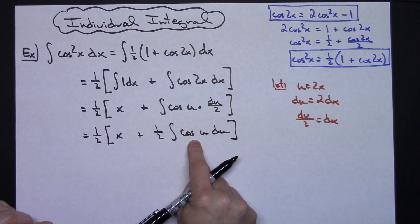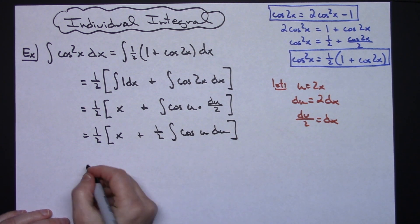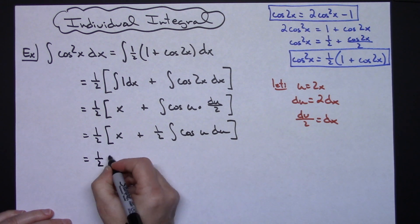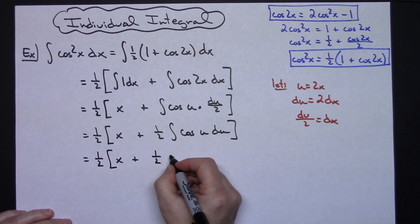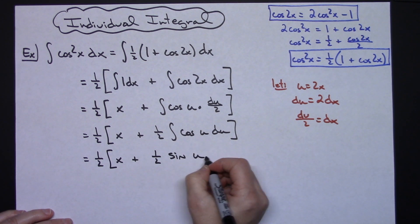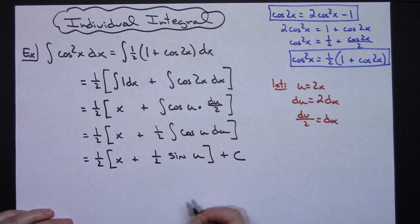And this is a straight integration to sine. So then I'm going to have 1 half times the quantity of x plus 1 half times sine u, and then plus C.